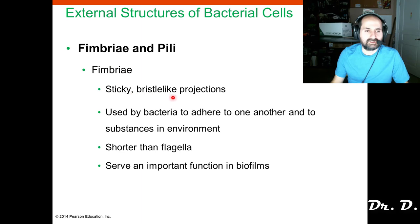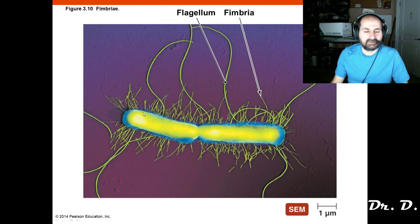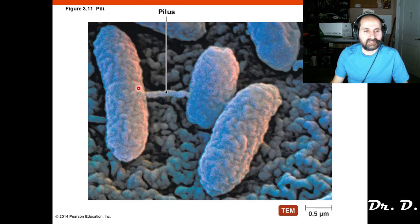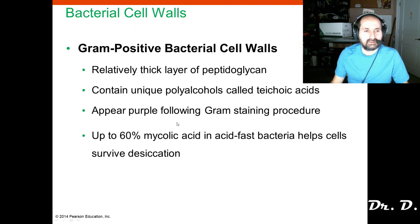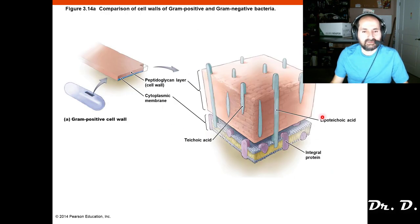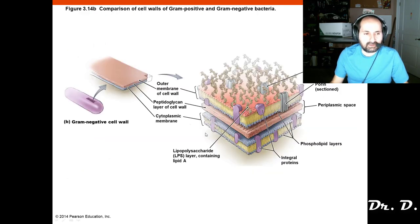Fimbriae are sticky bristle-like projections for adhering to surfaces. The sex pilus allows for horizontal gene transfer between bacteria. You should know the structure of the gram positive cell wall — it has a thick peptidoglycan layer outside of the plasma membrane, and you also have teichoic acids. Know the difference between that and the gram negative cell wall.